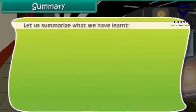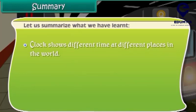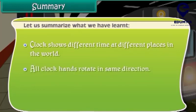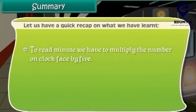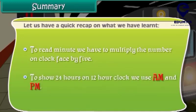Let us summarize what we have learned. Clocks show different times at different places in the world. All clock hands rotate in the same direction. To read the hour, we read the numbers written on the clock face. To read the minutes, we multiply the number on the clock face by 5. To show 24 hours on a 12-hour clock, we use AM and PM.